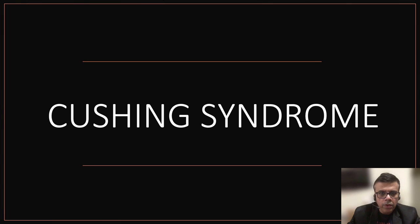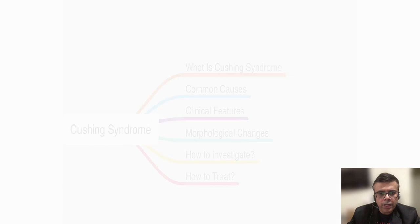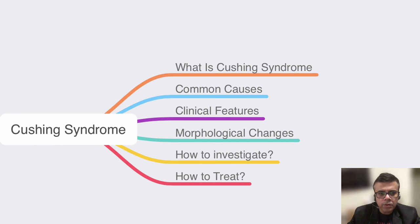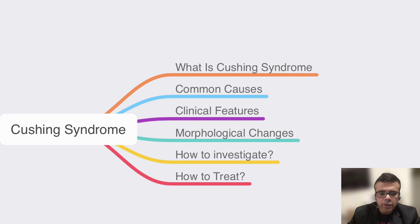Welcome to the video. Today we are going to discuss a very important, very common clinical lesion — Cushing syndrome. We'll discuss what Cushing syndrome is, the common causes, clinical features, morphological changes associated with various tumors, how to investigate and differentiate among the different causes, and how to manage Cushing syndrome.